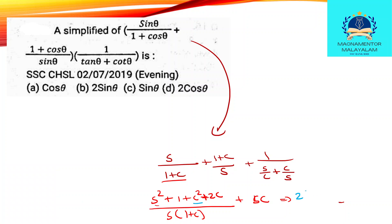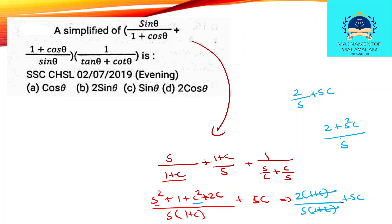2 plus 2 cos. Now, 2 into 1 plus cos, over sin into 1 plus cos, gives 1 plus cos plus sin cos. 2 by sin theta plus sin theta cos theta. Sin theta cos theta. 2 by sin plus sin theta cos theta. 2 plus sin squared cos divided by sin. 1 by sin theta. Sin theta by 1 plus cos, plus 1 plus cos by sin.